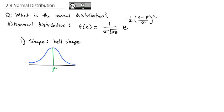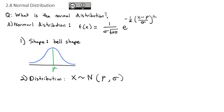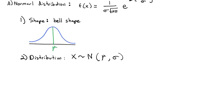We describe the distribution as x tilde N for normal, and then we state the mean and the standard deviation as the two arguments of the function. The normal distribution has slightly different shapes based on the standard deviation: the smaller the standard deviation, the taller and skinnier it is; the larger the standard deviation, the shorter and fatter it is.